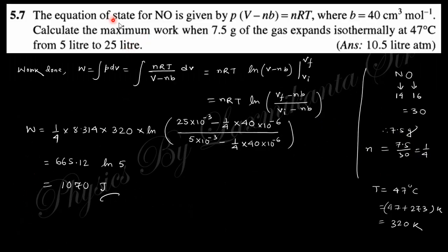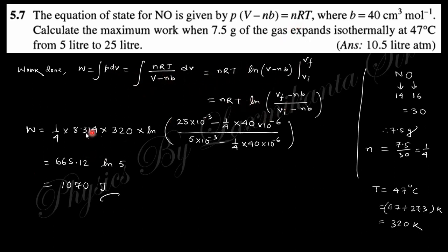Question 7: The equation of state for a gas is given. Calculate the maximum work done when 7.5 grams of gas expands. The atomic mass is 30, so n = 7.5/30 = 1/4 mole. Work done = ∫p dV; substituting the equation of state expression for p and integrating gives W = nRT·ln(V) minus terms involving nb, yielding the numerical answer.